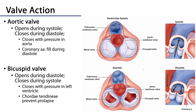Now let's think about the valves that are associated with the left ventricle. There is the bicuspid or mitral valve with anterior and posterior cusps.